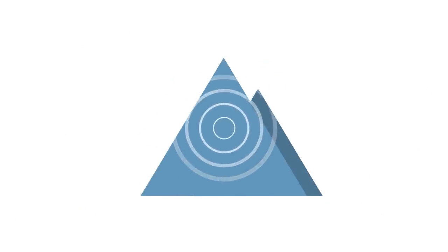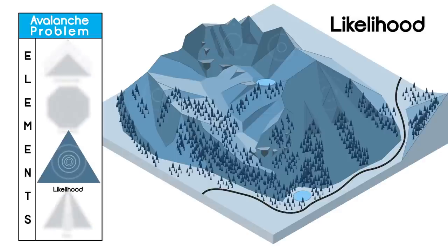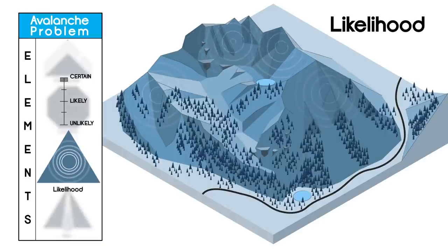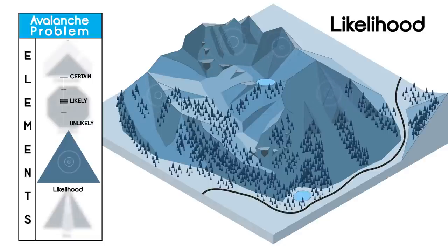The chance of triggering an avalanche, or likelihood, varies day-to-day and sometimes hour-to-hour. Likelihood is visualized here with the size and frequency of rings. Bigger, more frequent rings equals a higher likelihood of a human-triggered avalanche. It is described using terms such as unlikely, likely, or certain. The term applied reflects the highest likelihood the forecaster expects on that day.